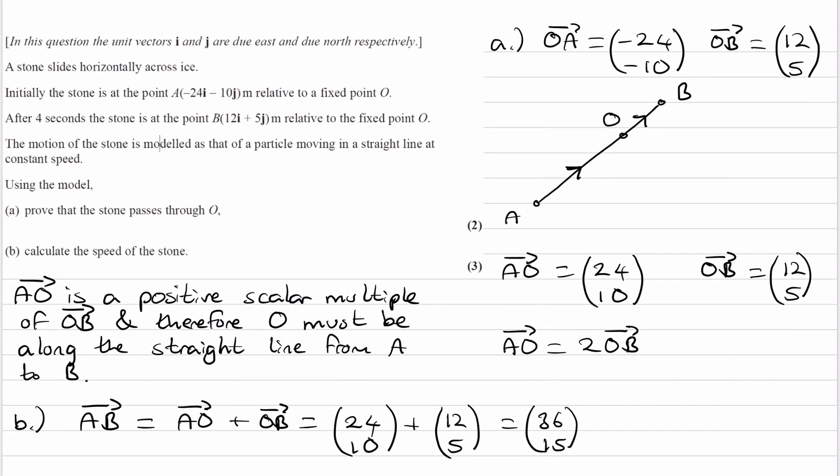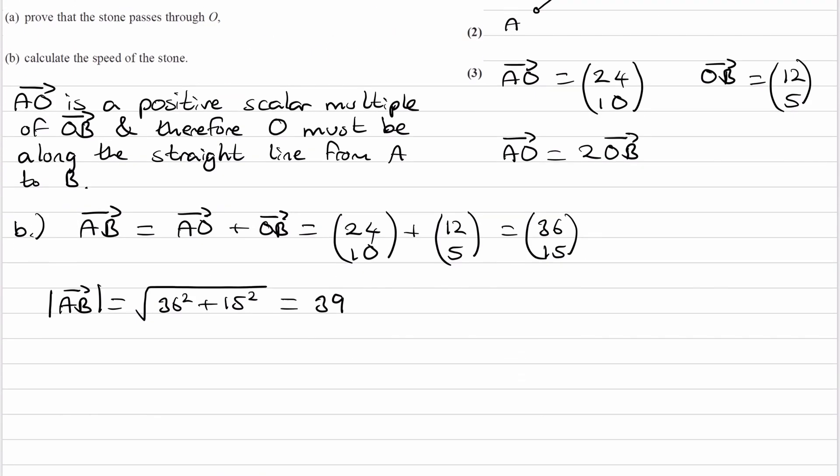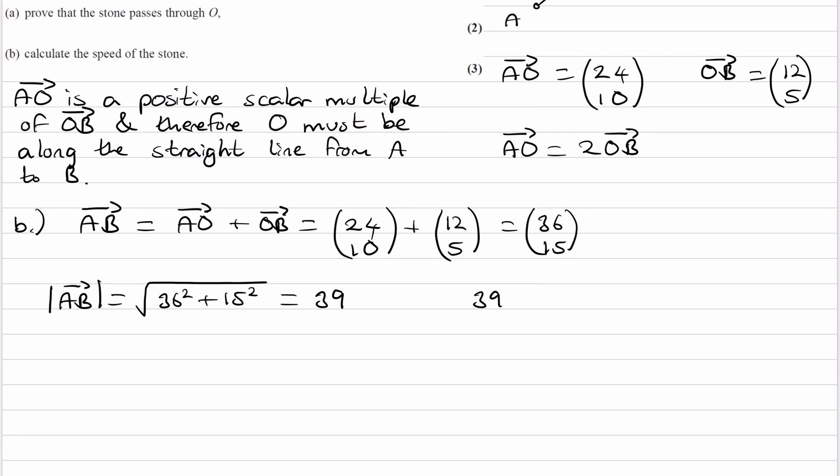This is the distance in meters. We have the time as 4 seconds. So 39 meters divided by 4 seconds gives us the speed of 9.75 meters per second.